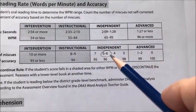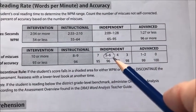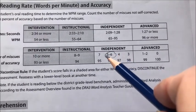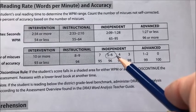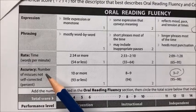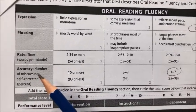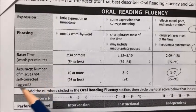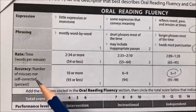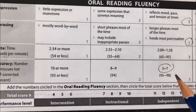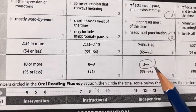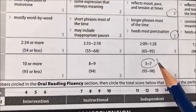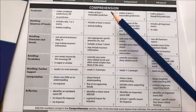The oral reading subtest indicates that the student is reading at an independent level, as she made five errors during the read. Therefore, in the accuracy section of the continuum — which is the number of miscues not self-corrected — we are going to place the student in the independent range, as she made five miscues during the read.